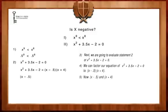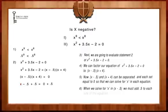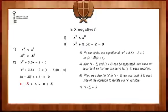Now, (x - 0.5) and (x + 4) can be separated and each set equal to 0, so that we can solve for x in each equation. When we solve for x in (x - 0.5), we must add 0.5 to each side of the equation to isolate our x variable. x - 0.5 + 0.5 equals 0.5, and 0 + 0.5 leaves us with x equals 0.5.